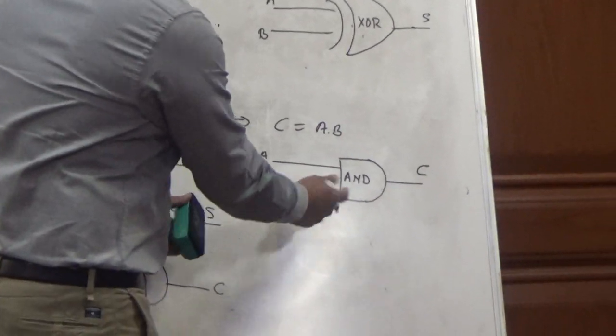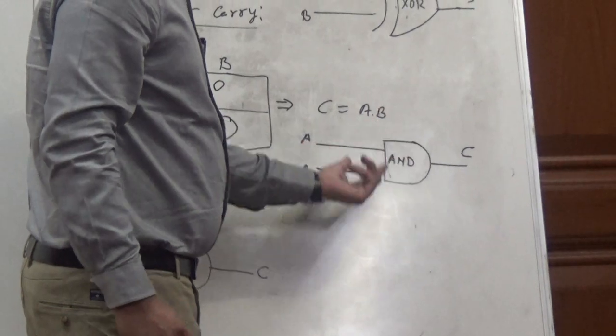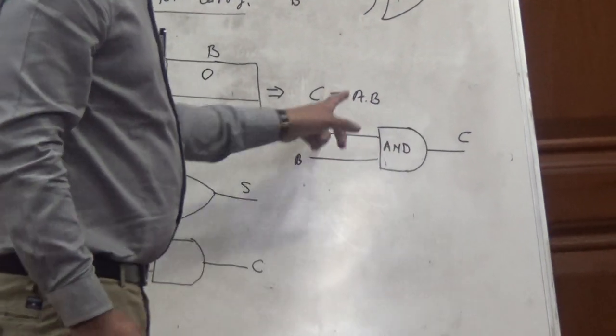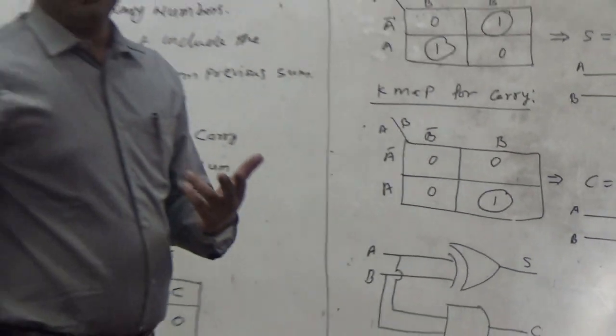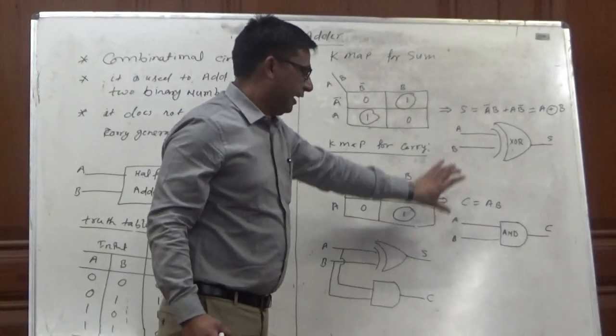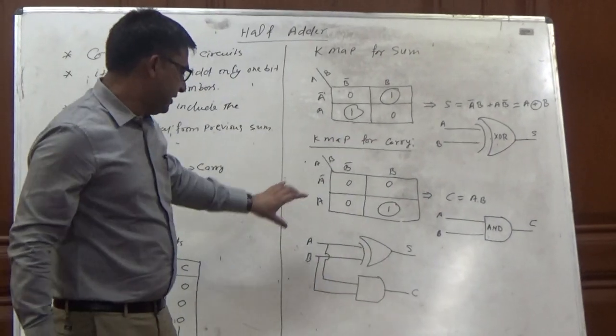This is only a single function, and this is just a combination, an AND gate combination. We require two gates to implement the half-adder: one is the XOR, second one is the AND gate.